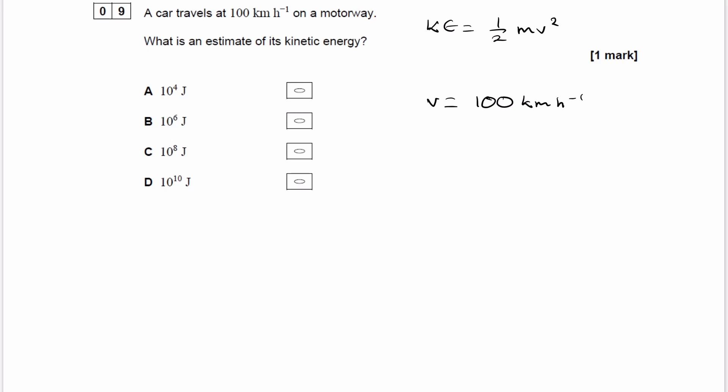So in order to put in this speed into that equation, we have to convert it to meters per second. So 1 kilometer per hour, we can rewrite this as 1 kilometer divided by 1 hour. That's the h to the minus 1, that means per hour.